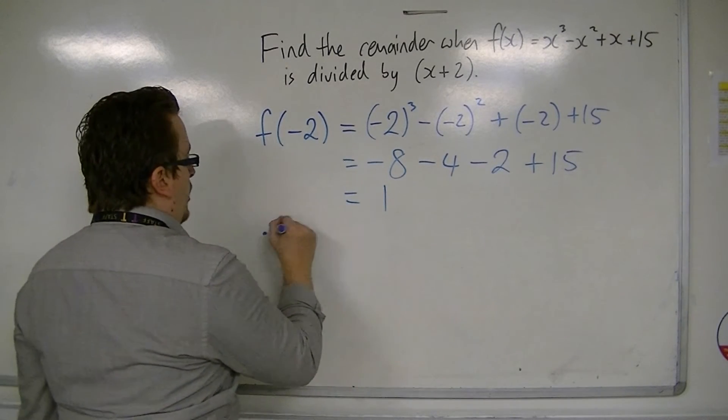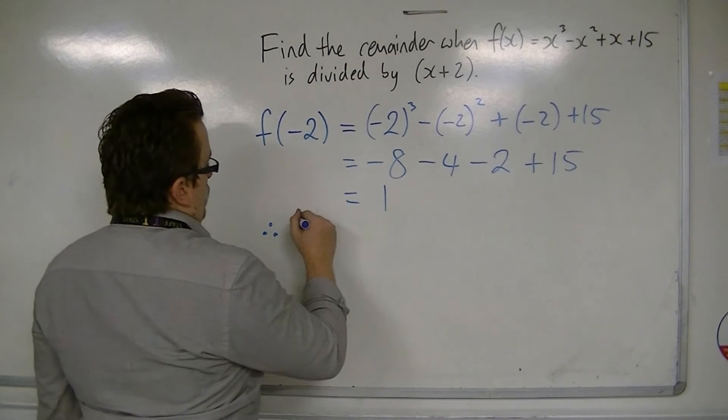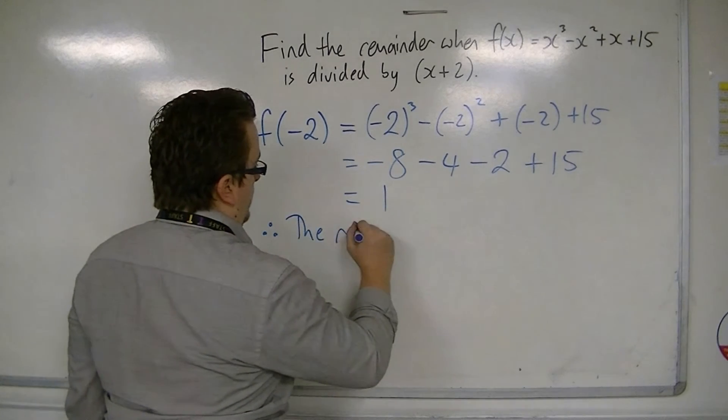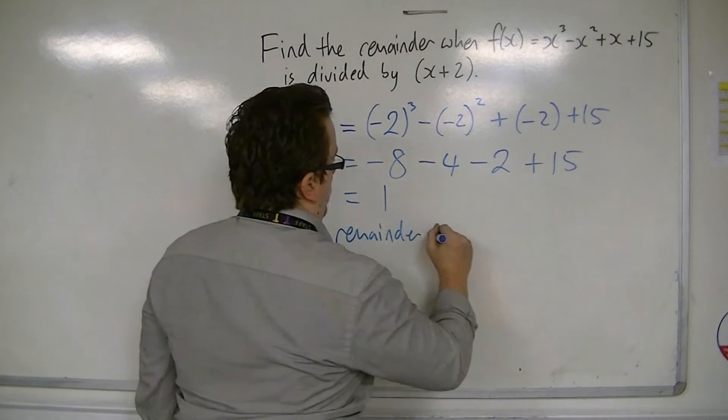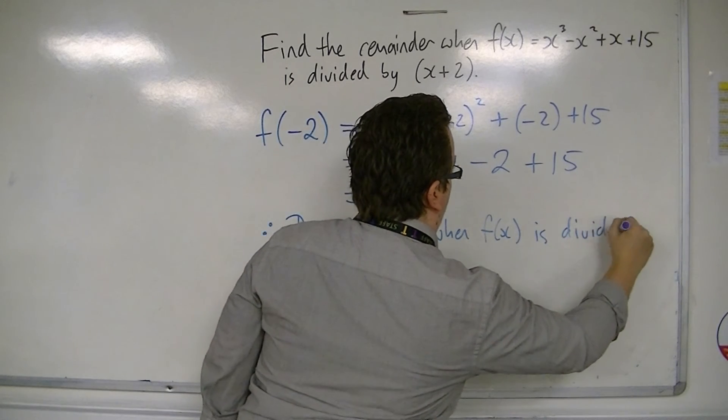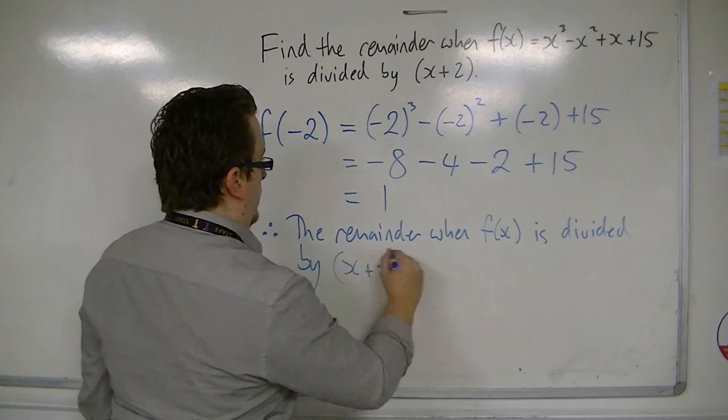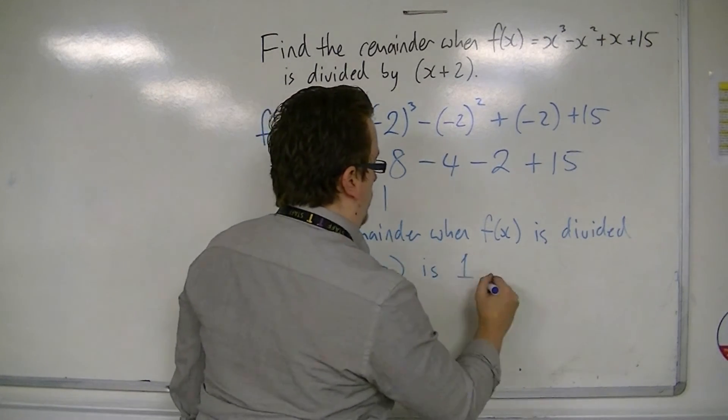So our concluding statement must say that therefore, the remainder when f(x) is divided by x plus 2 is 1.